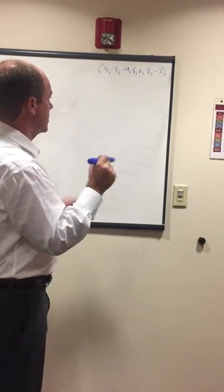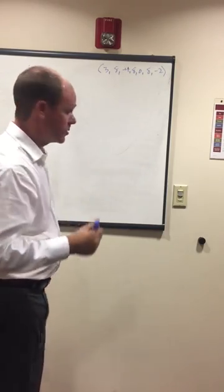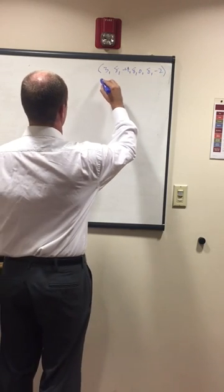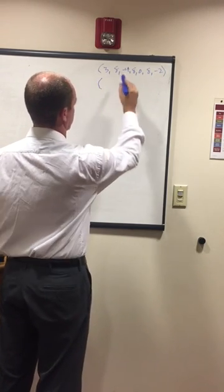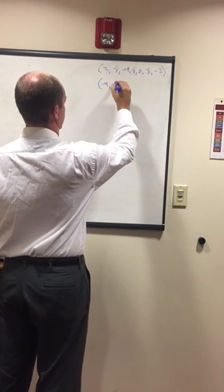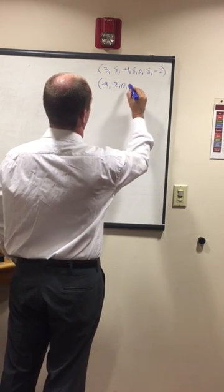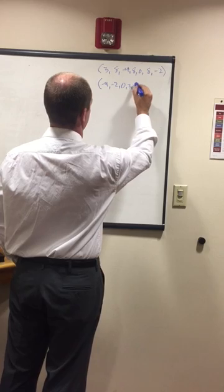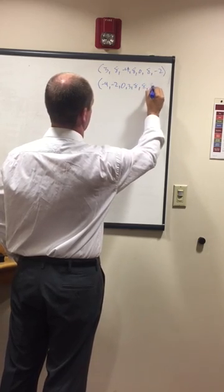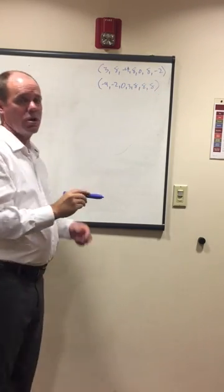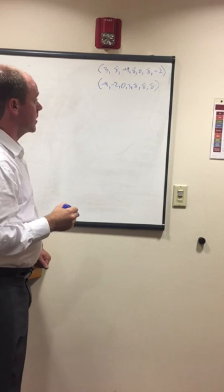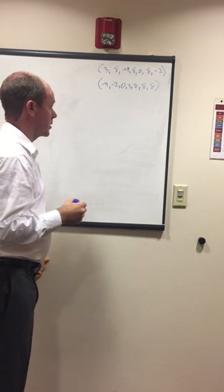So first thing, let's go ahead and order them lowest to highest. Starting with the negatives, negative four, negative two, zero, three, and then we have eight, eight, eight. All right. So we've now ordered these lowest to highest, and now we can work with them a little bit.